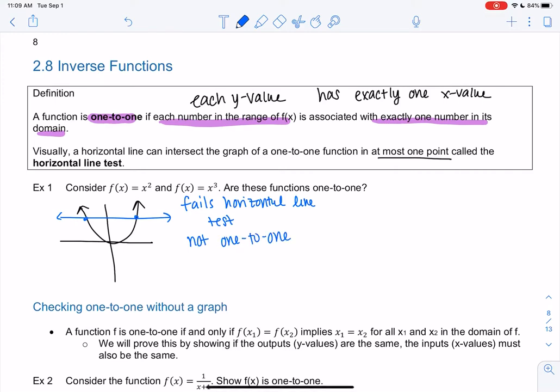So it's a function, but it's not one-to-one. And the reason it fails is there are y values, let's do 4, and it has more than one x.